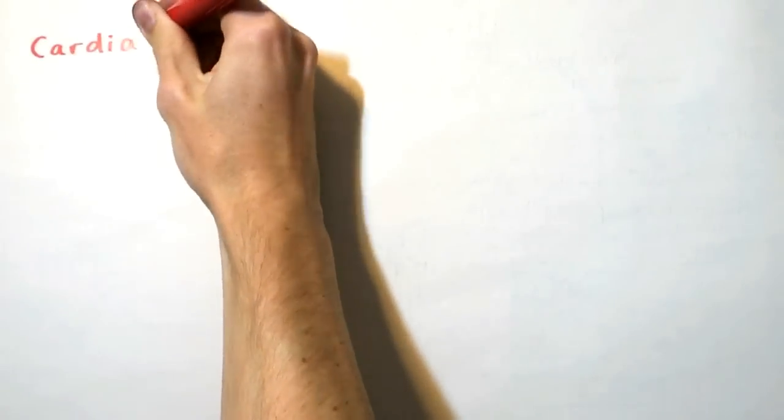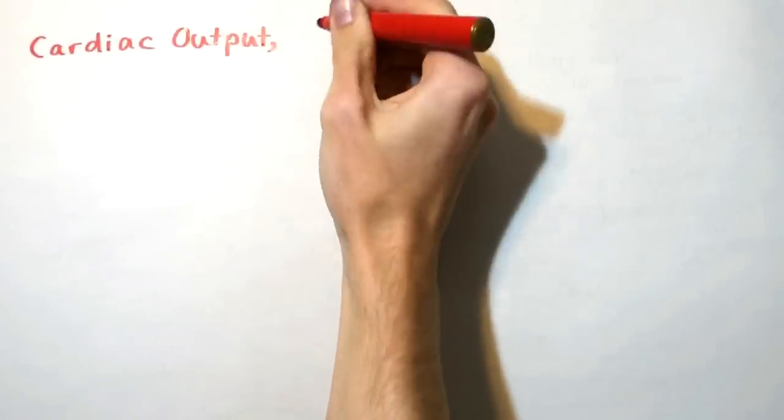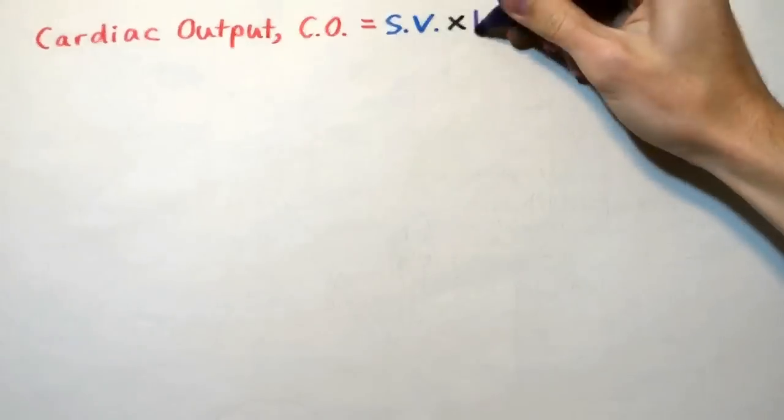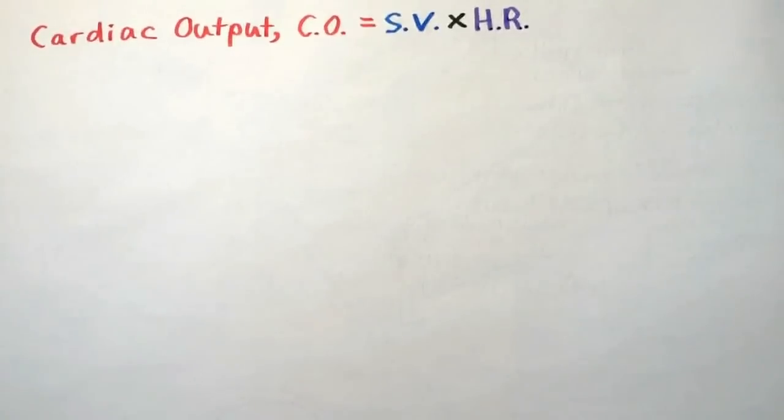The cardiac output of your heart describes the volume of blood being pumped by the heart per minute. It can be calculated by multiplying the stroke volume by the heart rate, and it is typically measured in liters per minute.